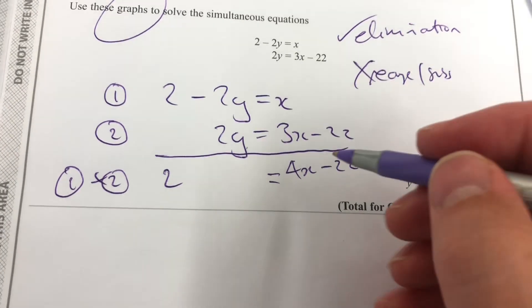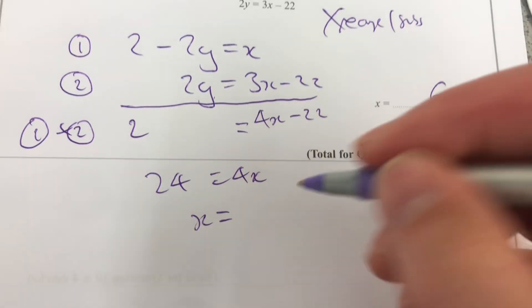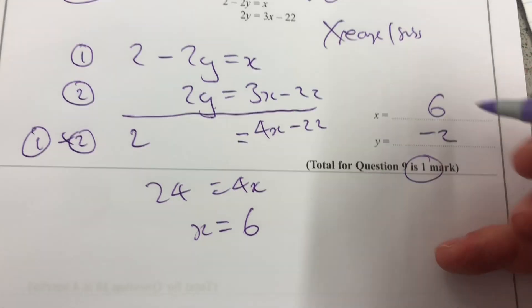Okay, that one works. So now I'm going to add 22 onto both sides. 24 equals 4x. x equals 6, as we expected.